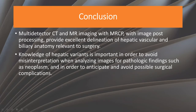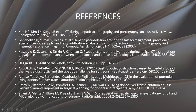In conclusion, multi-detector CT scan and MRI with MRCP and image post-processing provide excellent delineation of hepatic vascular and biliary anatomy and pseudo-lesions relevant to surgery. Knowledge of these variants is important in order to avoid misinterpretation when analyzing images for pathologic findings such as neoplasms, and in order to anticipate and avoid possible surgical complications. These are my references.